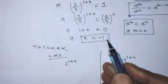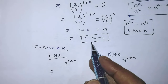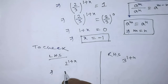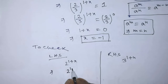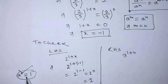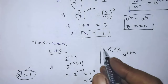If you put the value of x equal to minus 1 on the left hand side of this equation, then the left hand side becomes 2 to the power 1 plus minus 1, so it will be 2 to the power 1 minus 1, that is 2 to the power 0. According to this formula, we can write 1 in the place of 2 to the power 0. So this is the value of the left hand side.